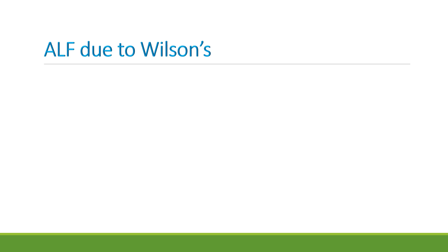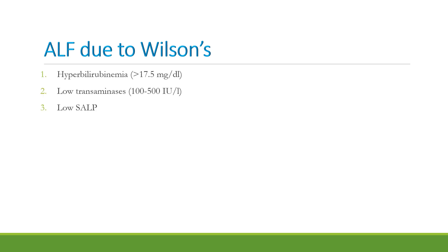Acute liver failure in Wilson's disease is a dreaded, near-fatal complication. S. Pagan proposes three criteria to diagnose ALF due to Wilson's disease: hyperbilirubinemia with serum bilirubin more than 17.5 mg%, low transaminases of 100–500 IU/L, and low serum alkaline phosphatase. An alkaline phosphatase to bilirubin ratio of less than 1 is considered supportive evidence of acute liver failure in Wilson's.